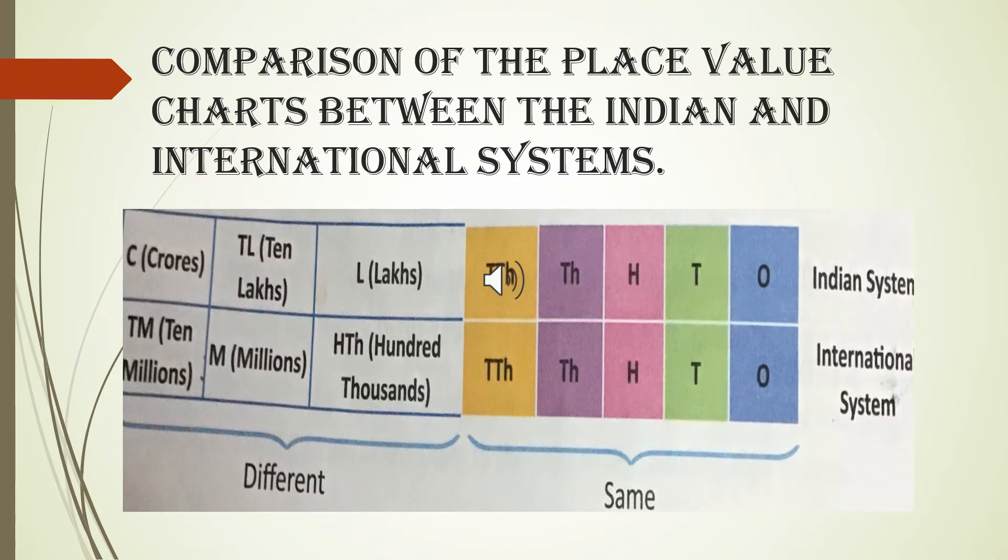Comparison of the place value chart between the Indian and international system. We know what is Indian system of numeration and international system of numeration. Under this system, up to 5 places, both the place values remain the same. From 6th place to the 9th place, both the place values are different.